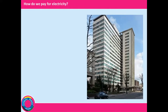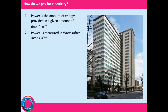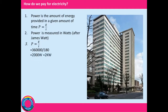Let's have a look at our answers. Power is the amount of energy provided in a given amount of time, so power equals energy divided by time. Power is measured in watts, after James Watt. For the kettle question, writing the equation: 360,000 joules provided in three minutes — which is 180 seconds — comes out at 2,000 watts, or 2 kilowatts.